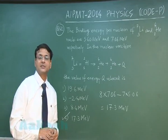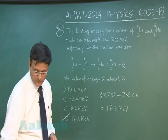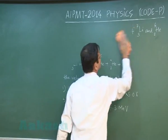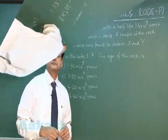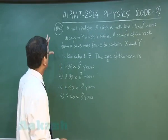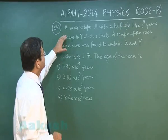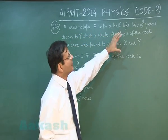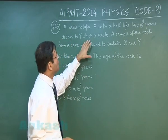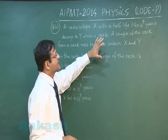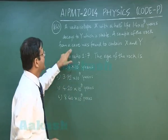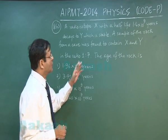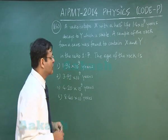Now let me explain next question that is question 43. In the next question that is question 43 which is based on radioactivity, it says that a radioisotope X with a half life of 1.4 into 10 to the power 9 years decays to Y which is stable. A sample of the rock from a cave was found to contain X and Y in the ratio 1 is to 7. Now what is the age of the rock that is what you are supposed to calculate.